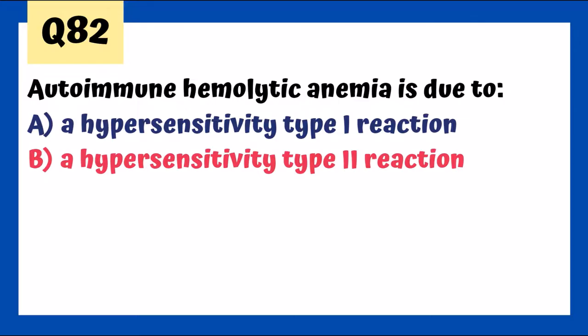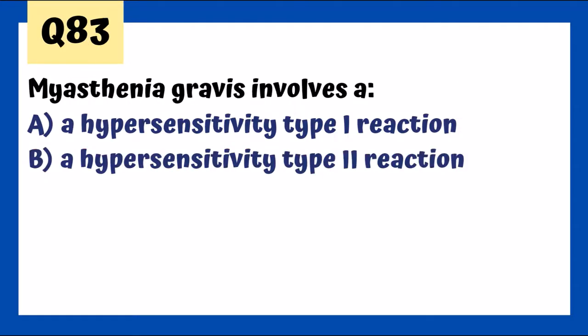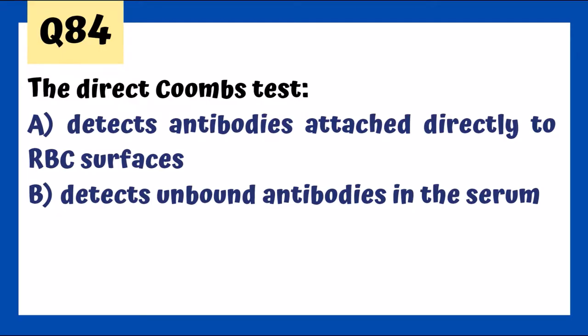Myasthenia gravis involves type 2 hypersensitivity — specific antibodies against the postsynaptic neuromuscular junction, leading to blockage causing muscle weakness, ptosis, and respiratory distress. Some patients undergo thymectomy to treat the condition. The direct Coombs test detects antibodies attached directly to red blood cell surfaces.